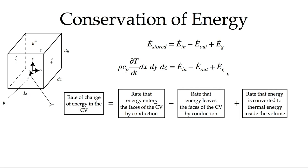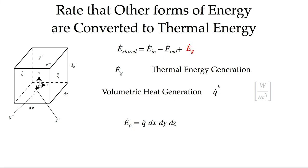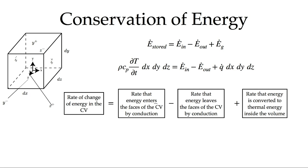Next we look at the energy generation term, which is relatively straightforward. Having defined the volumetric heat generation within our volume, we simply multiply it by the volume of the control volume to get the watts generated by energy converted from another form into thermal energy. An example is electric current flowing through the material where resistance causes heat generation, or a chemical reaction converting chemical energy to thermal energy. For our purposes, we assume a constant thermal generation within the volume.